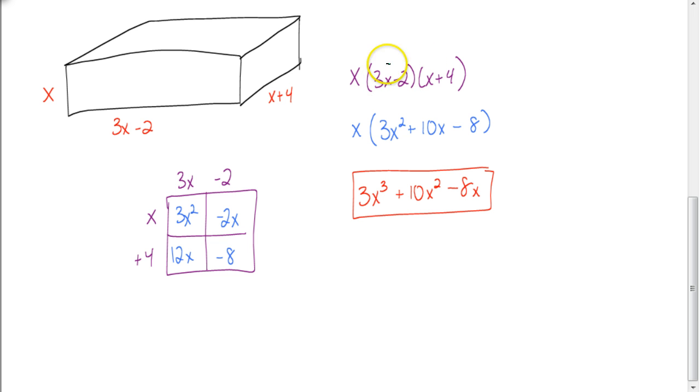Again, you could have distributed the... And, you don't have to do it this way. You can start by multiplying x times 3x and x times negative 2. And, take that answer times the x plus 4. What you don't want to do, though, is I see some people do this. They multiply everything by x. You only want to multiply one set by x and then multiply that set by the x plus 4.